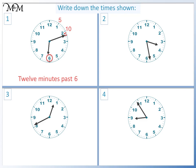Question two. The minute hand is pointing at five, ten, fifteen, twenty, twenty-five, plus another three minutes makes twenty-eight minutes past. The hour hand has moved past three, so the time is twenty-eight minutes past three.